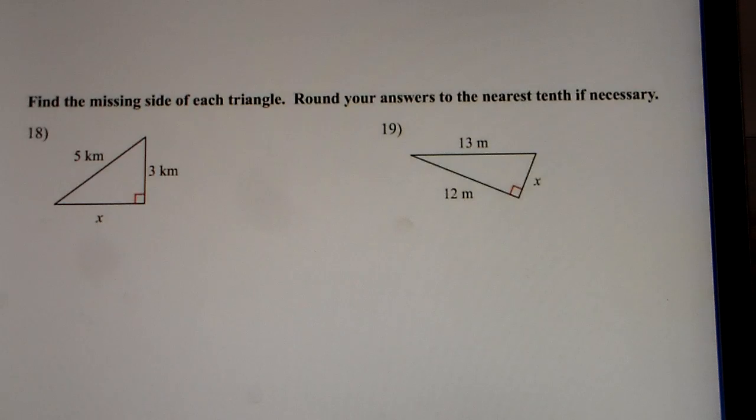That's number 17. Number 18, we're using the Pythagorean theorem where the biggest side is for C. You have x² plus 3² equals 5². 25 minus 9 is going to get you 16, and the square root of 16 is 4, so x equals 4 for number 18.